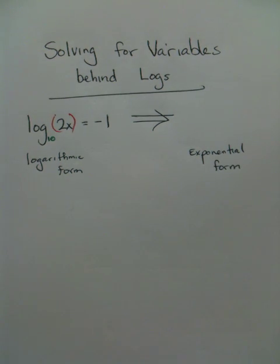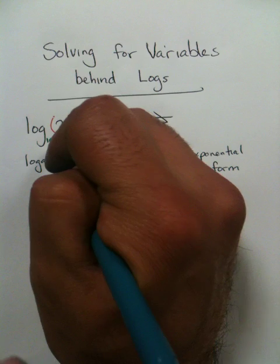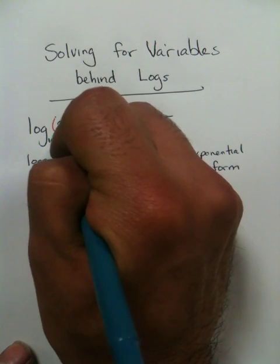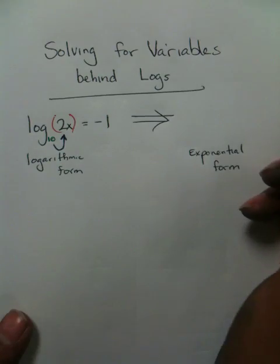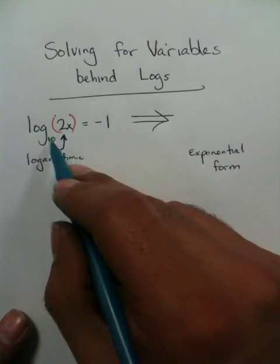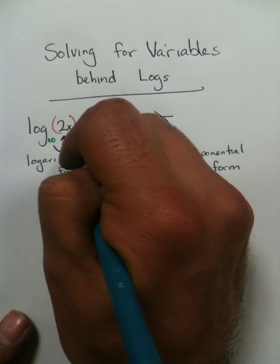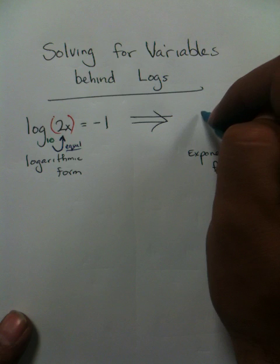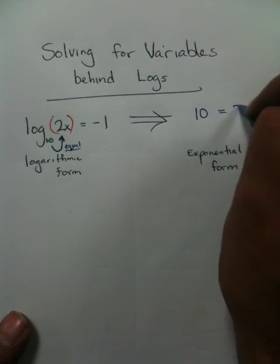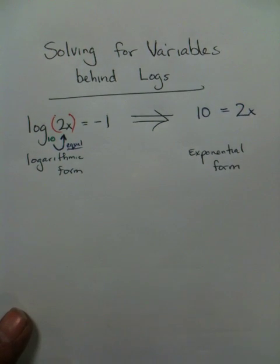I teach my kids to do this as a process. We take this 10, and we really want it to equal 2x. So I use these arrows to guide us. I say, let's make this equal. In math, if you want two things to equal each other, you just use an equal sign.